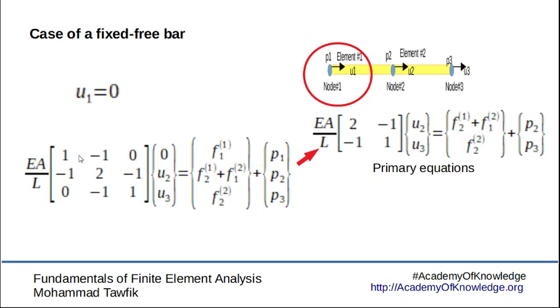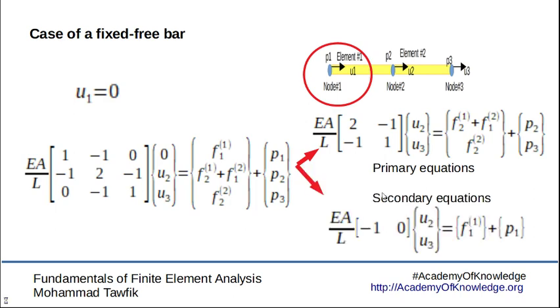And the first column of the system matrix, then we get the secondary or the auxiliary equations from the first row. This will get us to know what p1 is. Now since I fixed the bar, I don't know the reaction force in the support here.